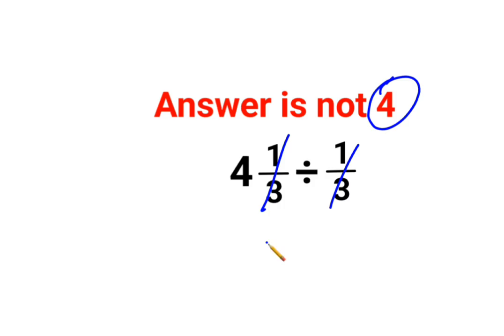1 by 3, 1 by 3 gets cancelled. 4 divided by 1, the answer is supposed to be 4. But no, that's not how these things work.